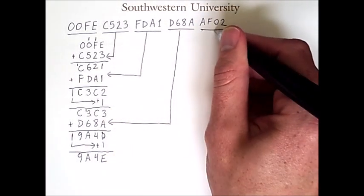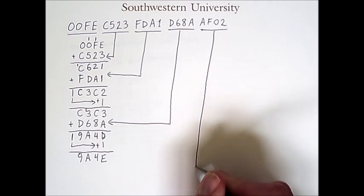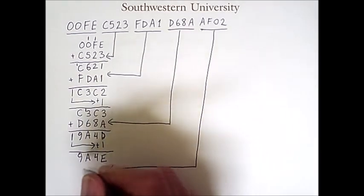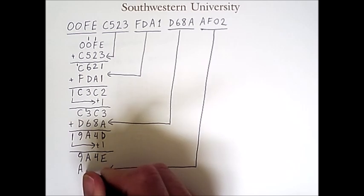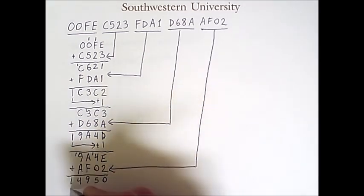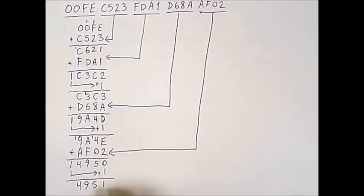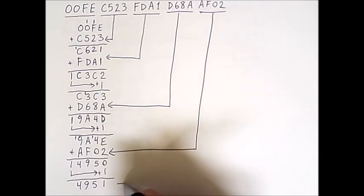And next we'll add our last 16-bit word to get our final sum from this computation. This sum also has a 1 that carries out and that wraps back around. And our final sum is 4951, but it is not our final result.